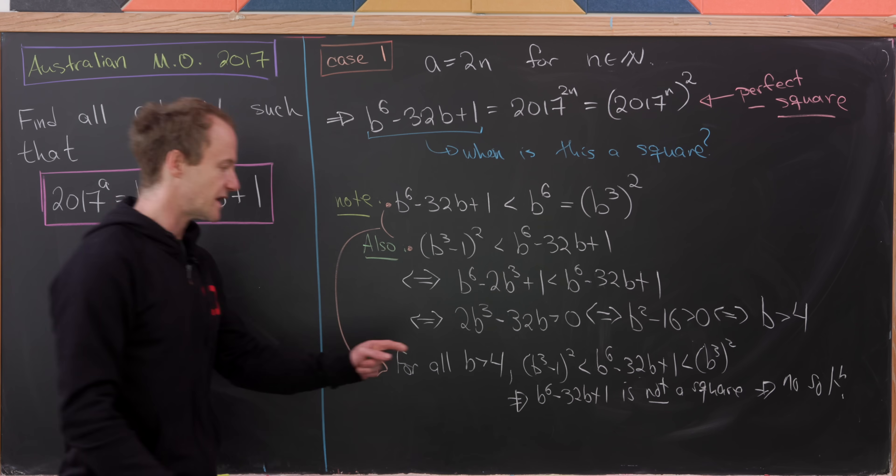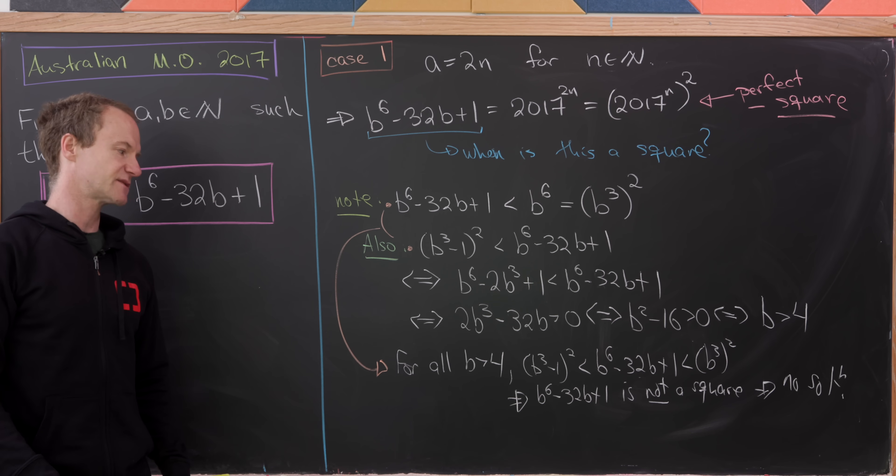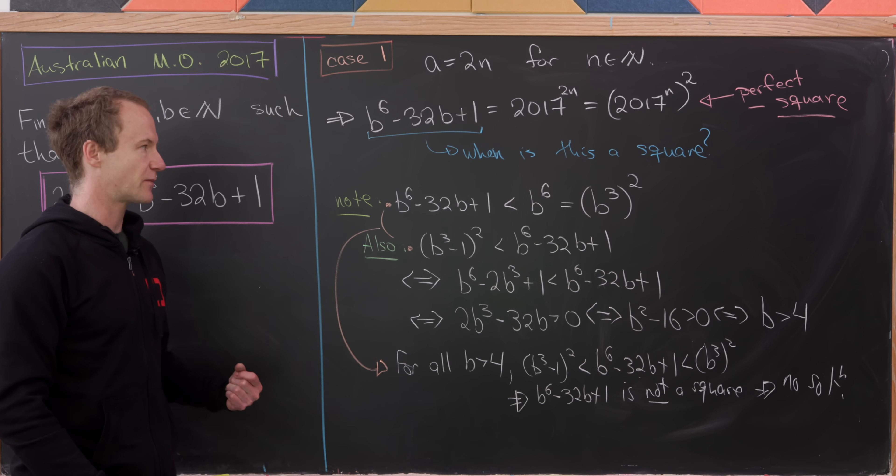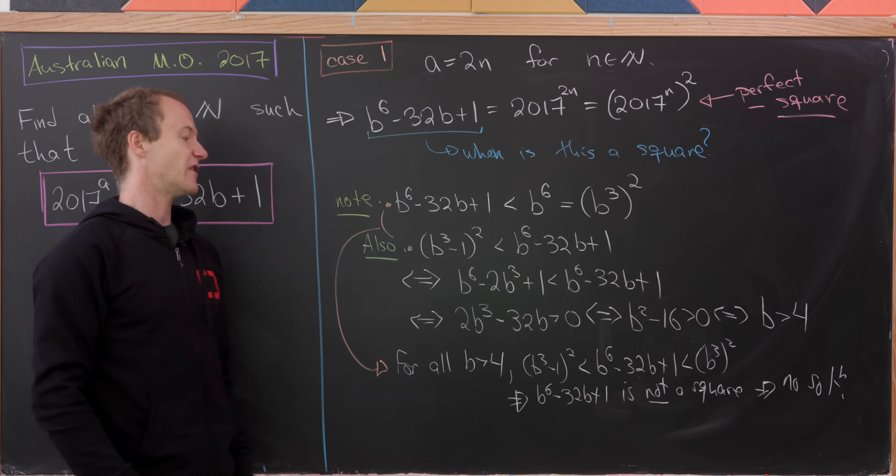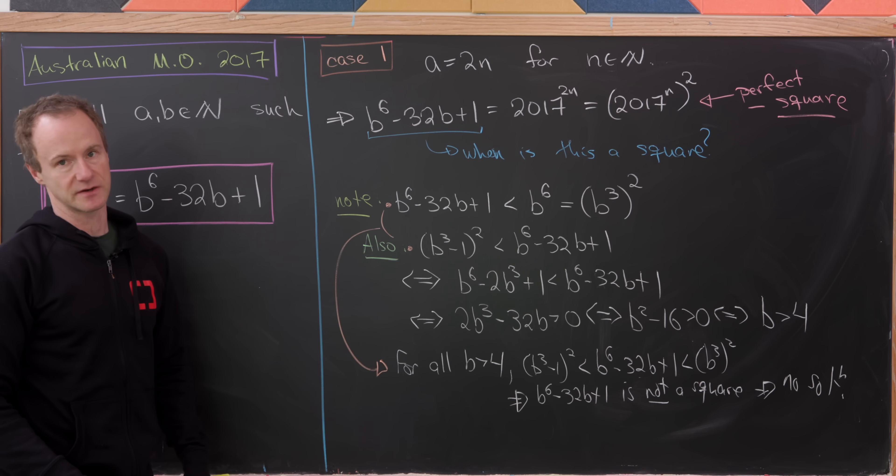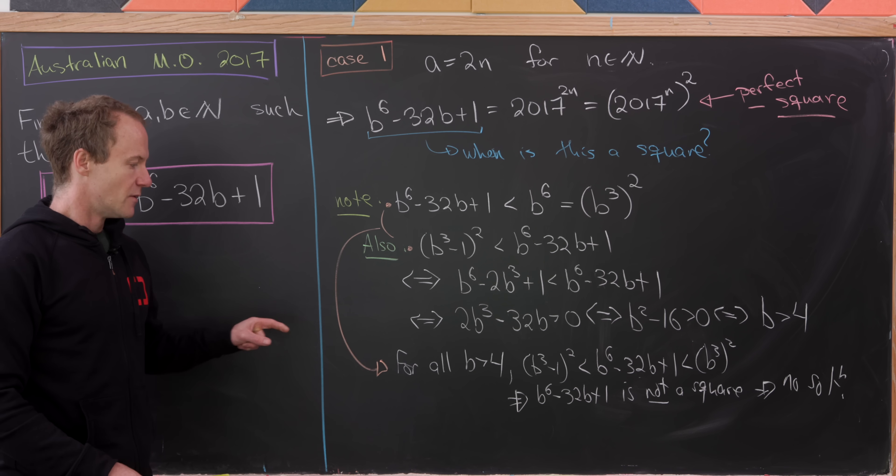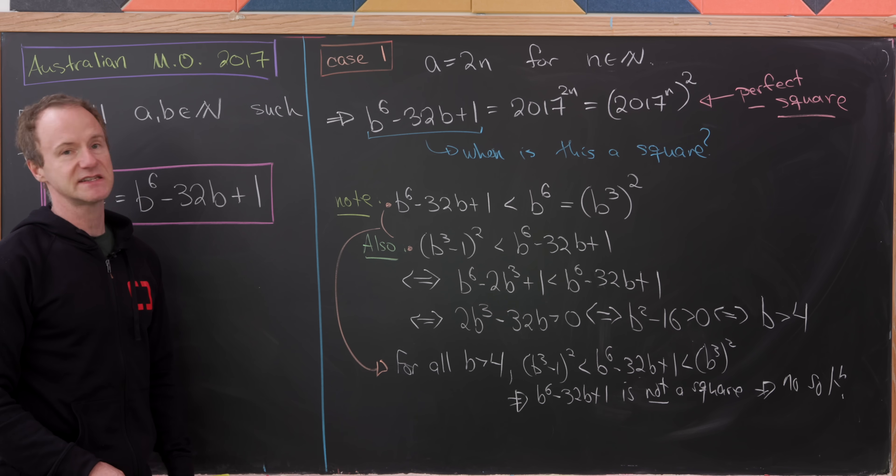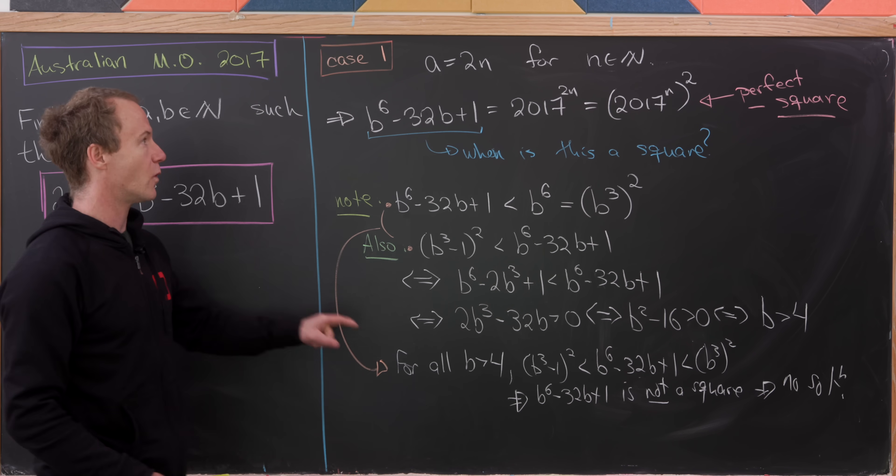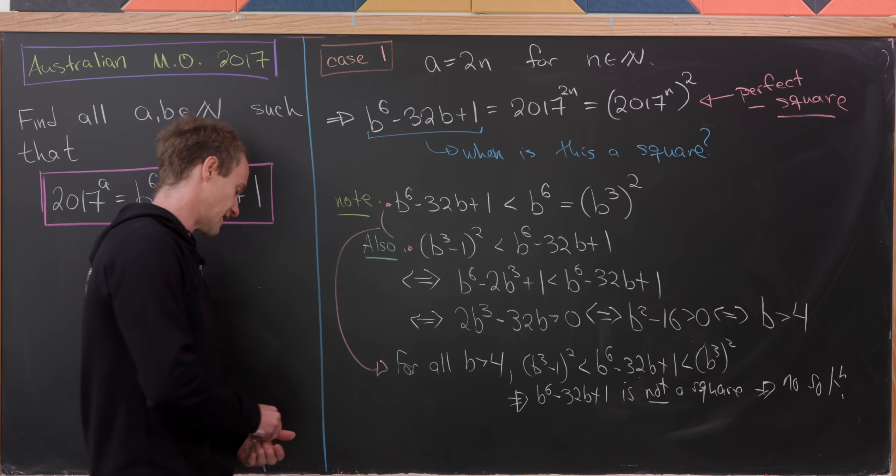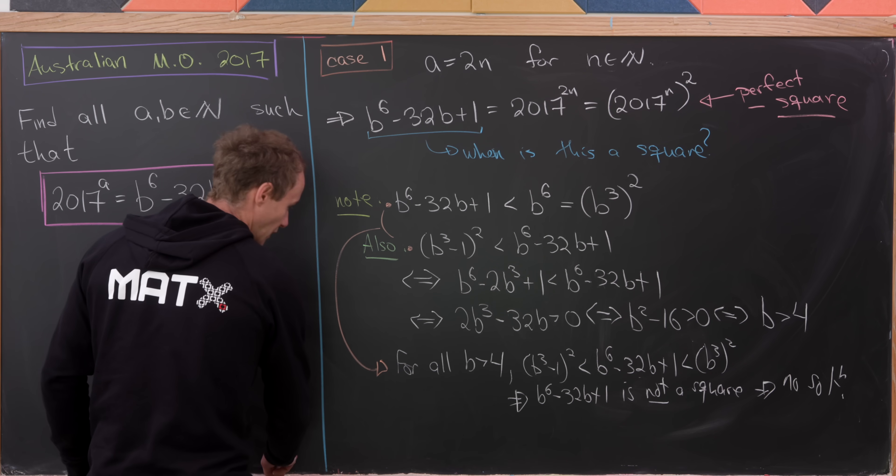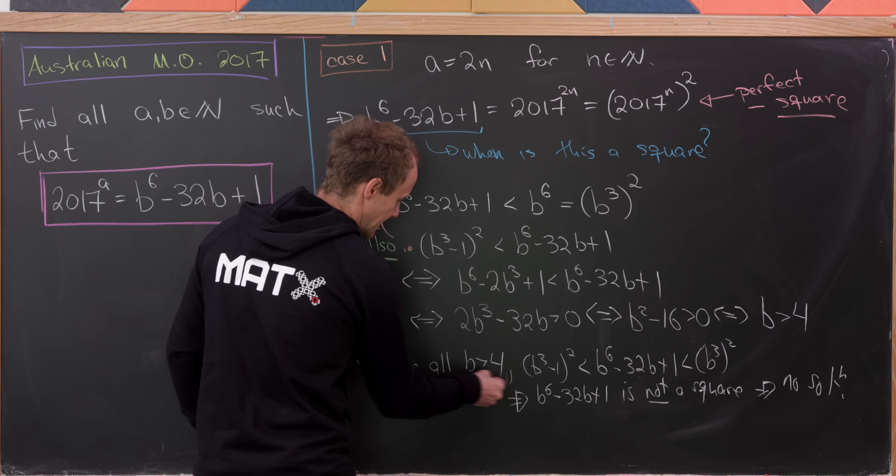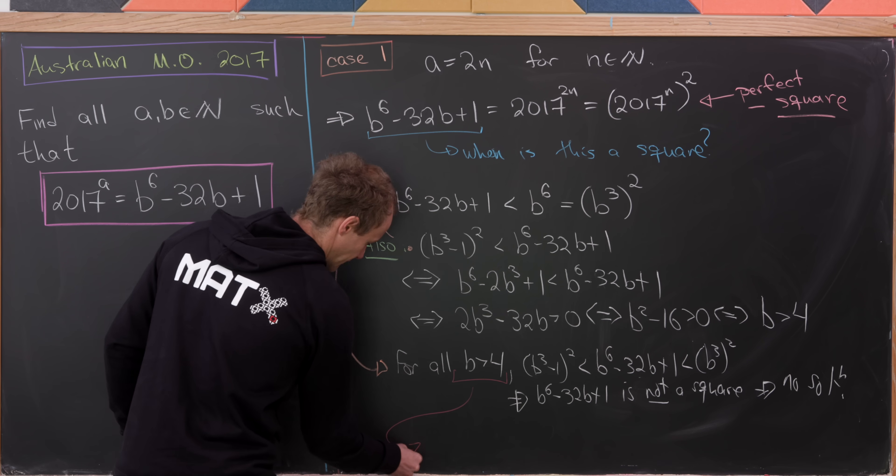Because we at least needed this B^6 minus 32B plus 1 to be a perfect square to even think about having a solution. But notice that's only for the cases when B is bigger than 4 and A is even. So that means we also need to look at the cases when B is less than or equal to 4.